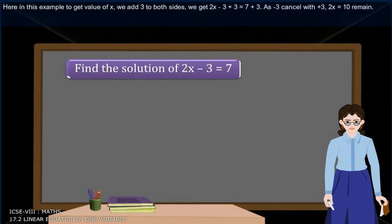Here, in this example, to get the value of x, we add 3 to both sides. We get 2x - 3 + 3 = 7 + 3. As -3 cancels with +3, 2x = 10 remains.